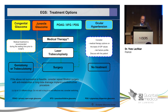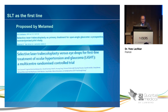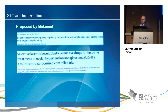Why as first line? Because usually we have the tendency to treat first with medical therapy and then propose SLT after. But we now have the possibility to treat before this progression. I see many patients referred for surgery after SLT, having tried all the drops. The first-line therapy for SLT was proposed a long time ago by a colleague from Miserable Bellarmine, and published as a randomized study with SLT as primary treatment for open-angle glaucoma.